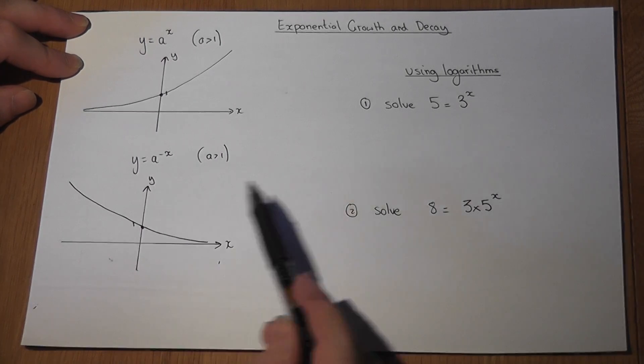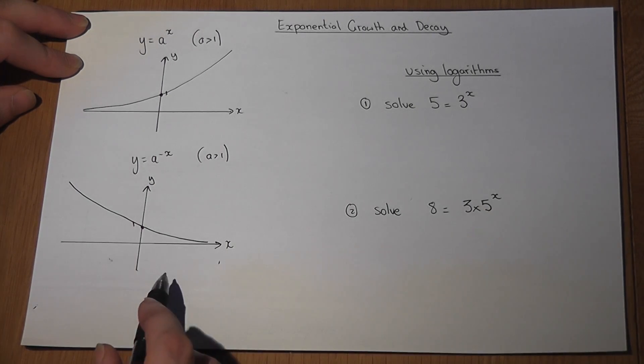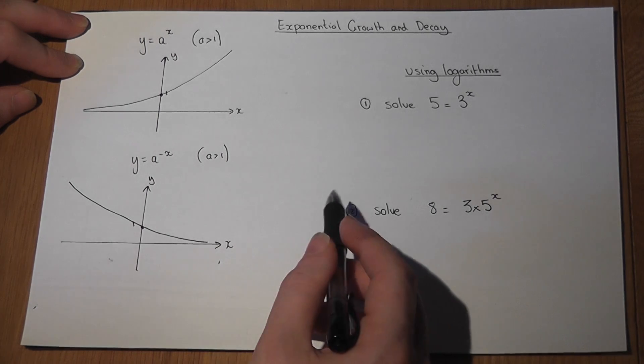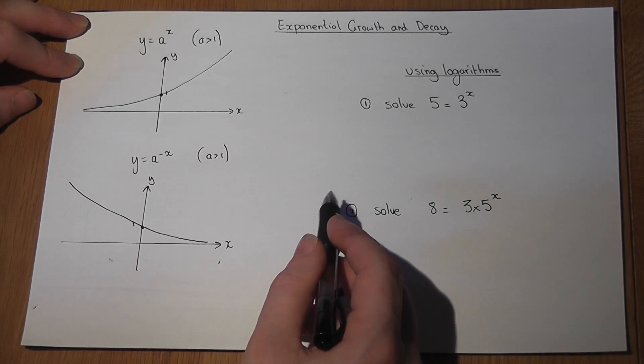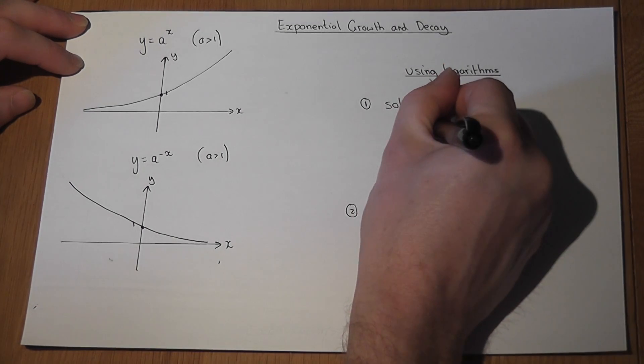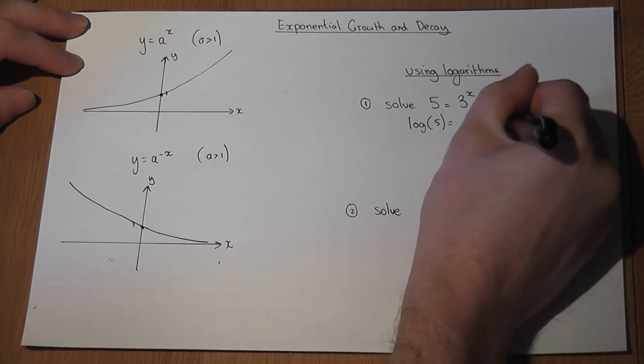Now there are certain equations you must be able to solve of this style, where we're looking for the power. The power is the unknown. There's a technique called logarithms, in which when given an equation like this, we take logs of both sides.